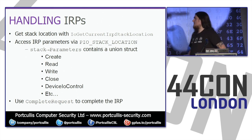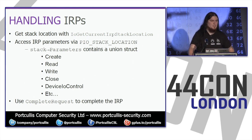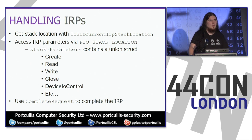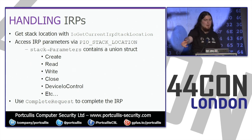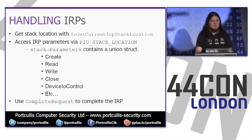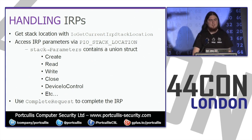If you want to handle one of these IRPs — these I/O request packets — you get what's called the stack location of the IRP, which is basically a pointer. You access IRP parameters via an IO_STACK_LOCATION structure. You look at the parameters, which are a union structure — it has properties for create, read, write, close, device IO control, etc. — and they contain a structural representation of the parameters. You pick the right one depending on what kind of IRP you've been sent. Then you use the complete request API, a kernel API, to complete the IRP, essentially saying this driver has now processed this IRP and you can stop worrying about it.